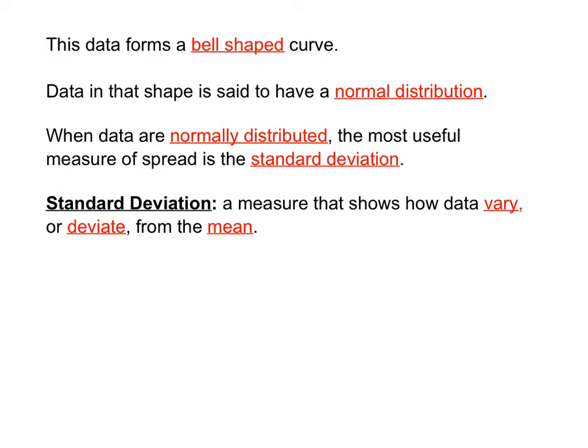Data that forms that perfect symmetric curve is said to be a bell-shaped curve — think of a bell like the Taco Bell bell. Data in that shape is also said to have a normal distribution, and when data is normally distributed the most useful measure of spread is standard deviation. Standard deviation is defined as a measure that shows how data vary or deviate from the mean.